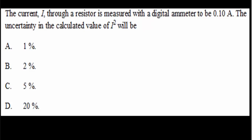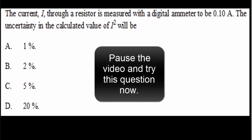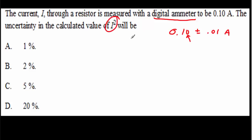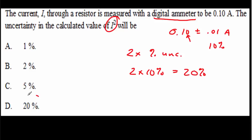Now here are some typical IB questions on propagating uncertainties. Pause the video and try the first one yourself. Since the current is read on a digital ammeter, it's 0.10 plus or minus 0.01 amperes — you put a 1 in the smallest digit for a digital meter. Since we're squaring, we take 2 times the percent uncertainty. The percent uncertainty is 10%, so 2 times 10% equals 20%. The correct answer is D.